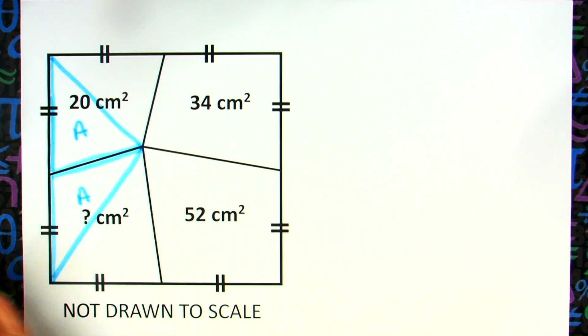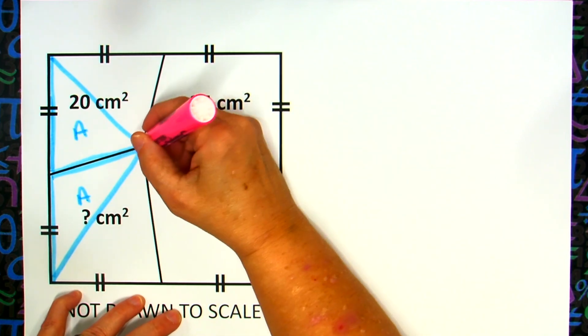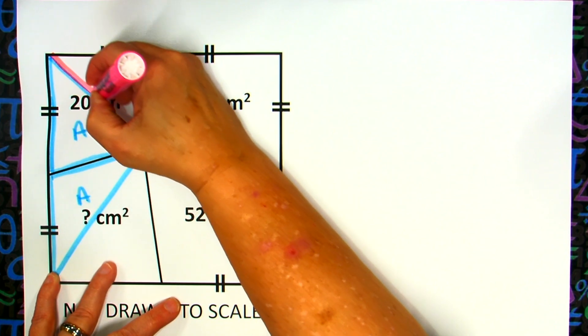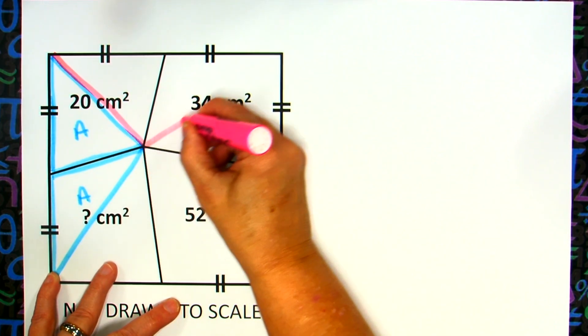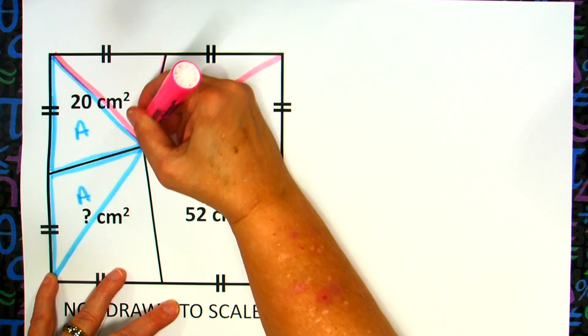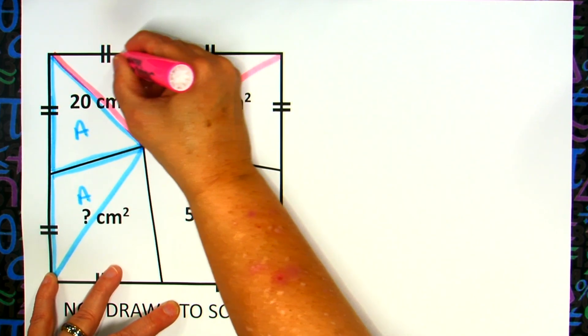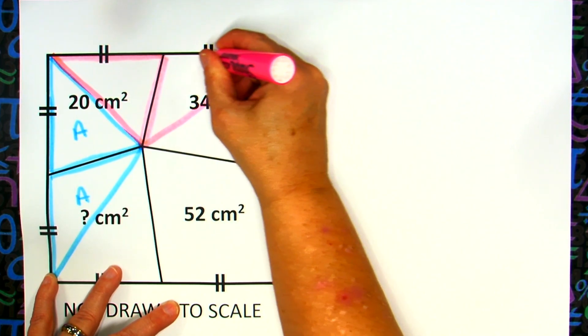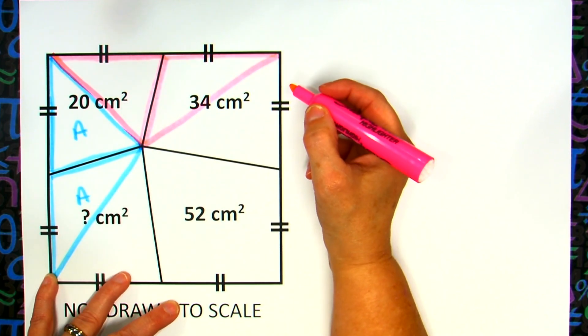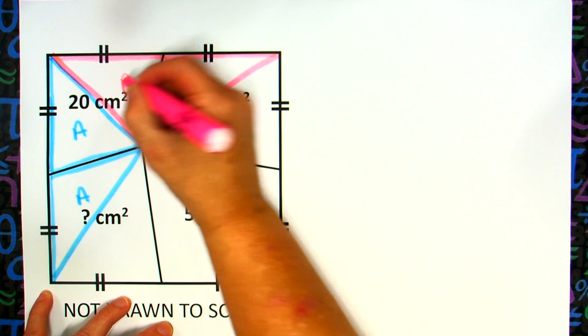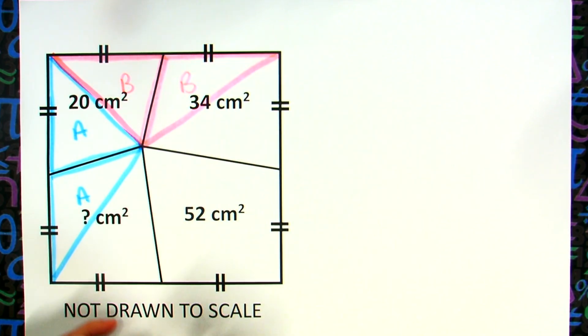Now, what I can do is then do that same process all the way around this square. So, from here, I'm going to draw from the center to the corner, and then I'm going to draw from the center to this corner over here. Again, I have formed two triangles, two little triangles. So, one little triangle there, and then the other little triangle here. Again, they have the same base. They have the same height. So, what that tells me is they have the same area. Again, don't know what that area is, but I know it's equal. So, we're going to say that's area B, and that's area B.